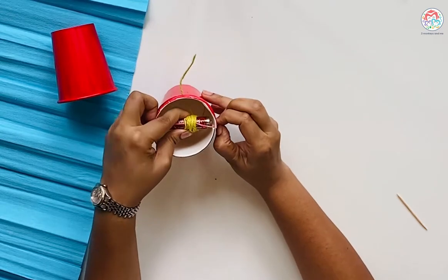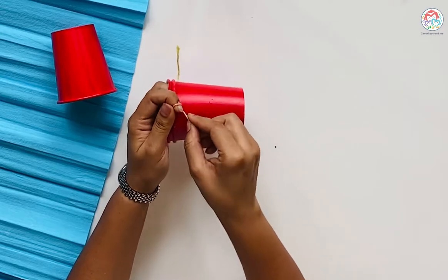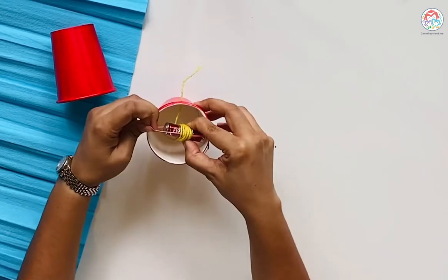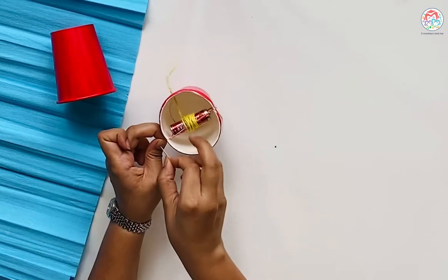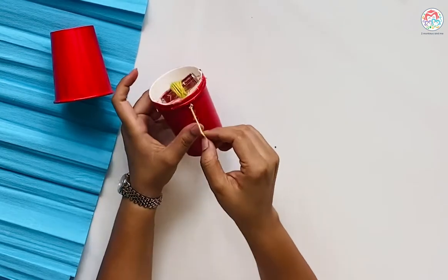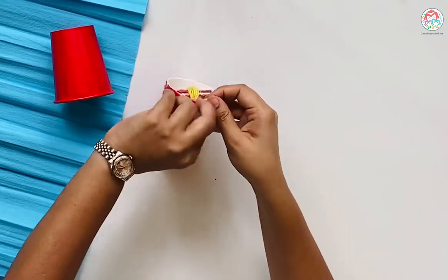Take half of your toothpick and insert it in like this. Do the same thing on the other side of the battery to have something like this.